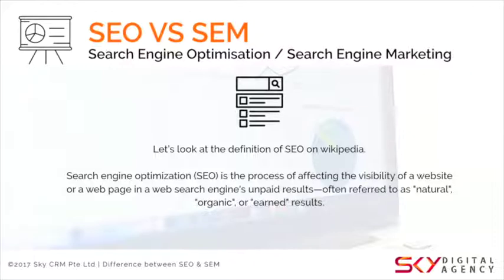Let's look at what SEO means on Wikipedia. SEO is the process of improving your website's visibility on search engine results. These are unpaid, organic results, often referred to as natural results — meaning these websites have earned their place on the first page of Google or Yahoo.